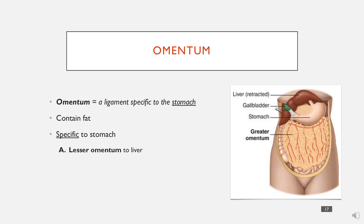There are two omenta to know about. The first is the lesser omentum, which connects the liver to the stomach. The second is the greater omentum, which connects the stomach to the transverse colon. Here it looks like an apron coming down the front, and as you can see it has lots of vessels and lots of fat in it.